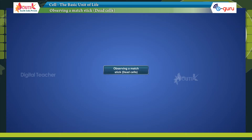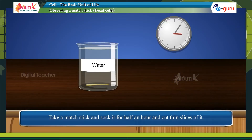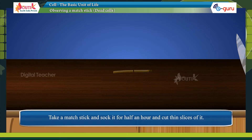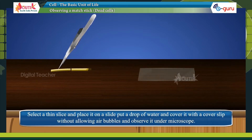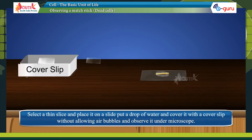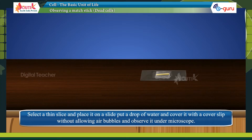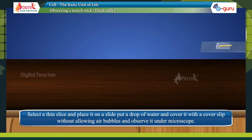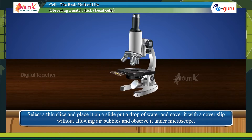Observing a matchstick: take a matchstick and soak it for half an hour, then cut thin slices of it. Select a thin slice and place it on a slide. Put a drop of water and cover it with a coverslip without allowing air bubbles. Then observe it under the microscope.